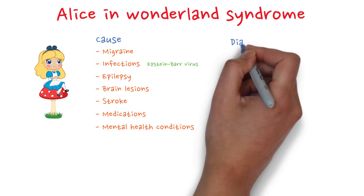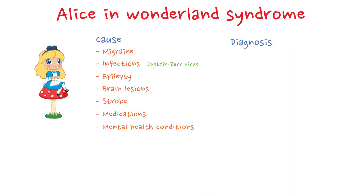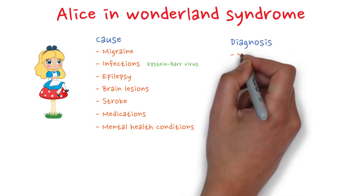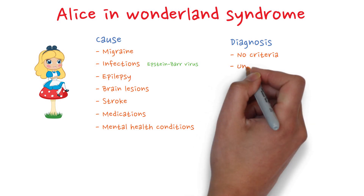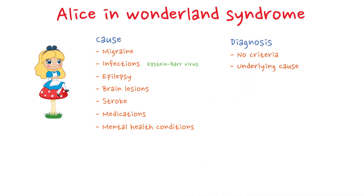Moving on to diagnosis, there is no official criteria for diagnosing Alice in Wonderland syndrome, mainly because the condition is rare and usually short-lived. Asking about symptoms, performing neurological tests, and diagnostic tests to rule out underlying serious brain-related conditions such as epilepsy, stroke, etc., is important.